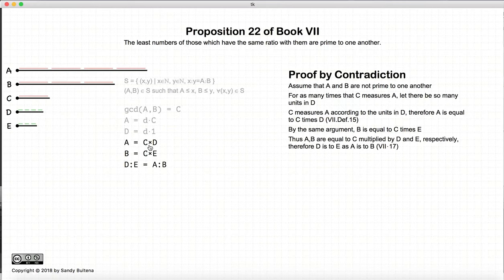Now if A is equal to C times D, and B is equal to C times E, then according to Proposition 17 of this book, the ratio of D to E is equal to the ratio of A to B.